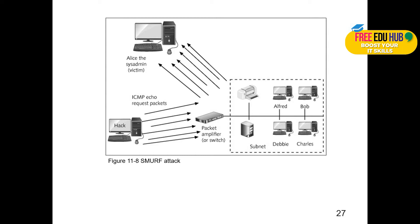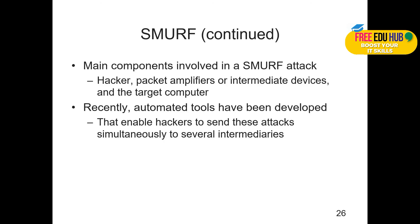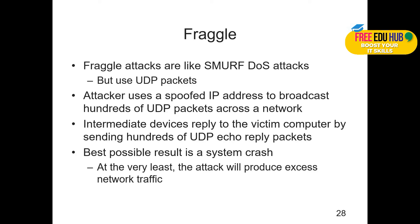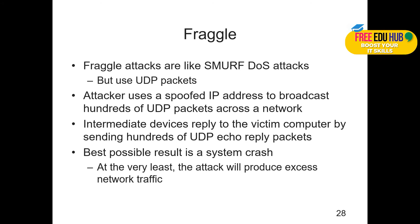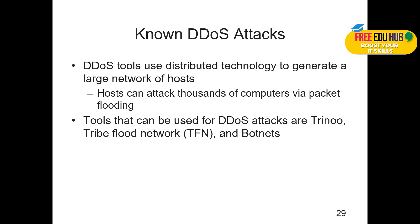It requires a lot of memory and processing time, which is why it's also called ping of death. The only difference between a SMURF attack and a Fraggle attack is that in a Fraggle attack they use UDP packets. The attacker uses a spoofed IP address to broadcast hundreds of UDP packets across the network. Intermediate devices reply to the victim computer by sending hundreds of UDP echo reply packets, resulting in a system crash or excess network traffic, making the computer unavailable or difficult to reach.